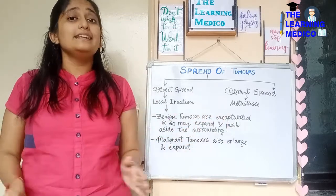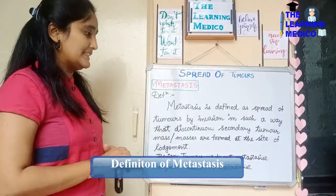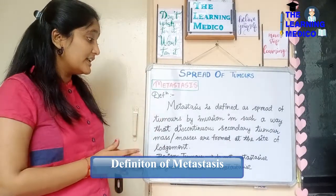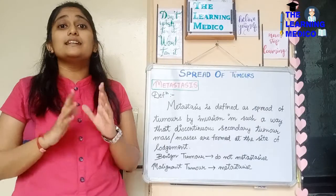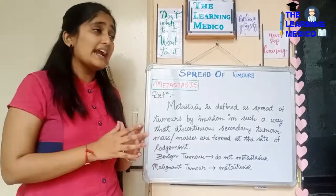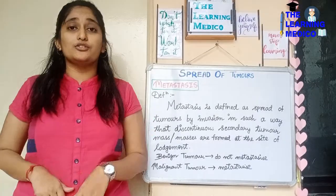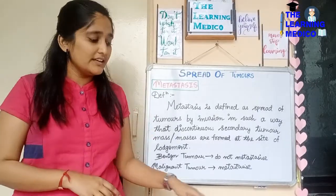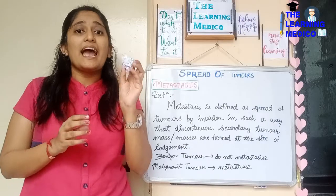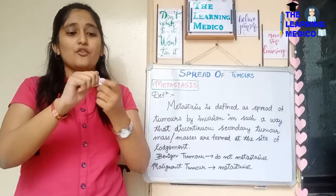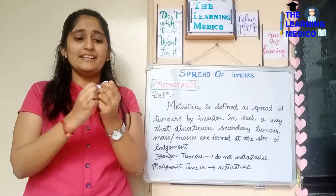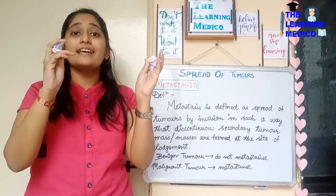Now in detail — the definition of Metastasis: Metastasis is defined as the spread of tumors by invasion in such a way that a discontinuous secondary mass or tumor is formed at the site of lodgment. Imagine this is a tumor — it divides and forms a secondary mass. Secondary means the primary origin is elsewhere, so this is the secondary mass.